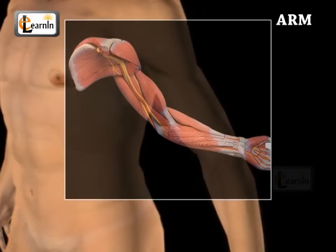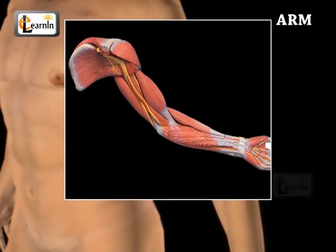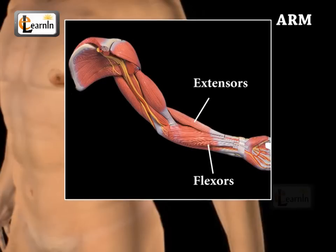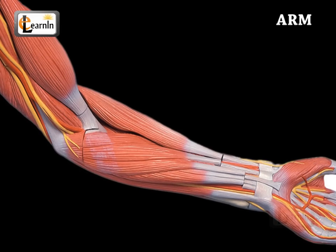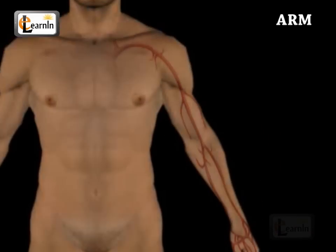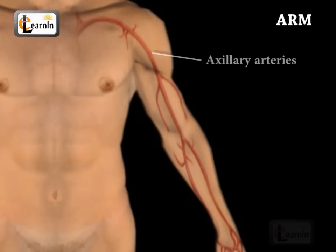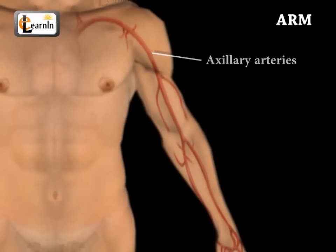The forearm consists of two muscles, namely flexors and extensors, which are connected to the wrist and fingers. The axillary arteries, which are considered to be the chief arteries, run through the armpit.